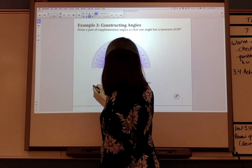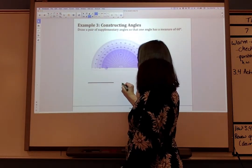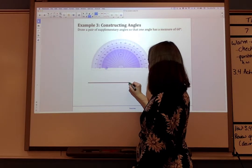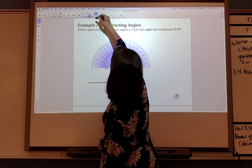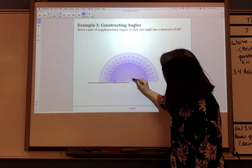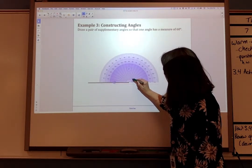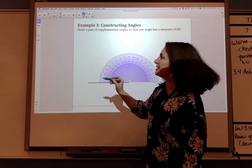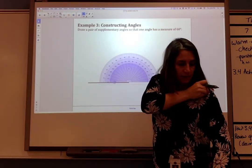So I'm going to go ahead and draw a line. And then I'm going to use my protractor. Move it down here so that the very center of the protractor is right on that line. Then I'm going to make a dot at 60 degrees.